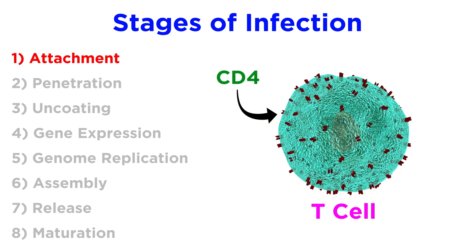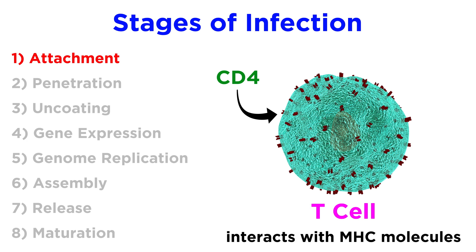They don't exist solely for the benefit of the viruses that hijack them. For example, CD4 molecules that sit on the surface of T cells in our immune system help the T cells carry out their normal function, which is interacting with MHC molecules, or major histocompatibility complex. However, CD4 molecules are the primary receptor for the HIV virus, so they need these proteins to get inside the cell.